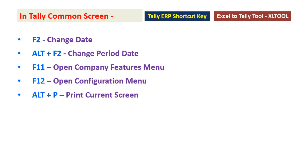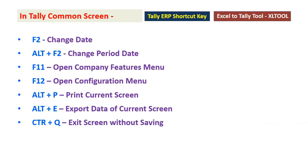Alt P: Print Current Screen. Alt E: Export Current Screen Data. Control Q: Exit Screen Without Saving. Alt D: Delete.